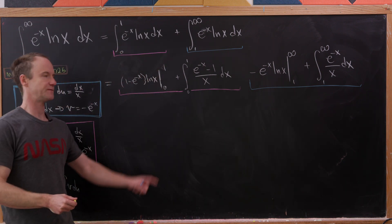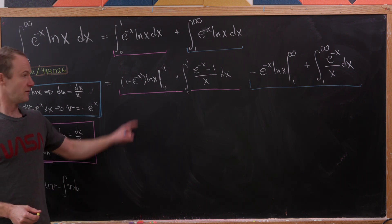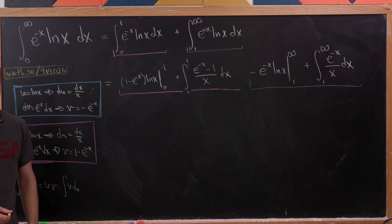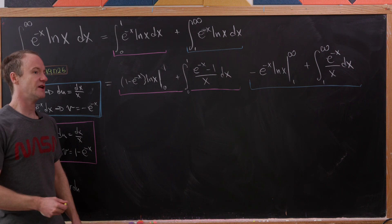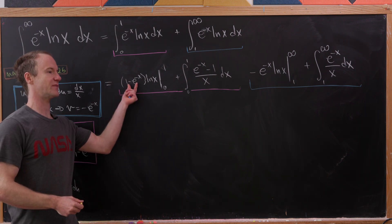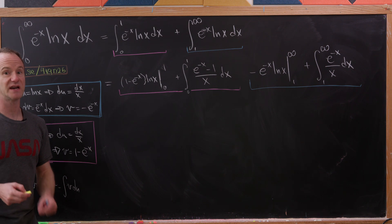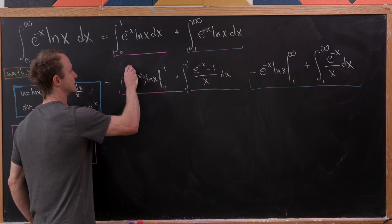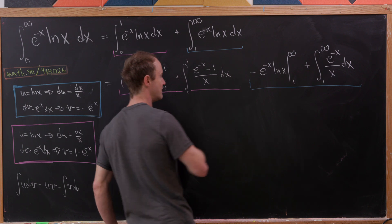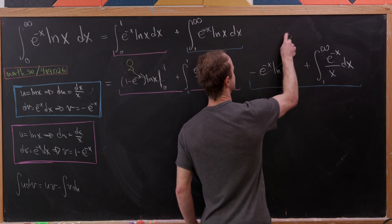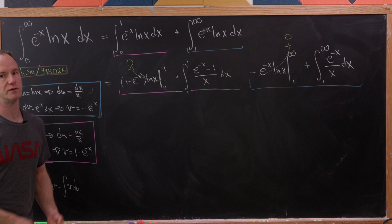Now let's look at the boundary terms. Plugging one into (1 minus e to the minus x) times the natural log of x gives zero because the natural log of one is zero. Taking the limit as x approaches zero from above gives an indeterminate form of type zero times infinity, but when all the dust settles that also gives zero. Very similarly, we get zero for the blue boundary expression as well, leaving us with just the sum of the two integrals.